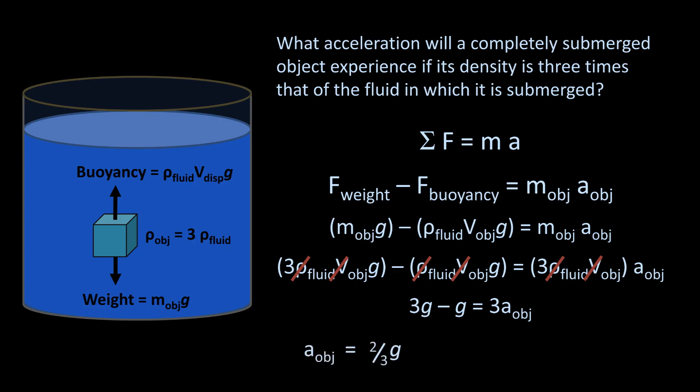And of course, g is a constant that's equal to 9.8 meters per second squared, which results in an acceleration of 6.5 meters per second squared.